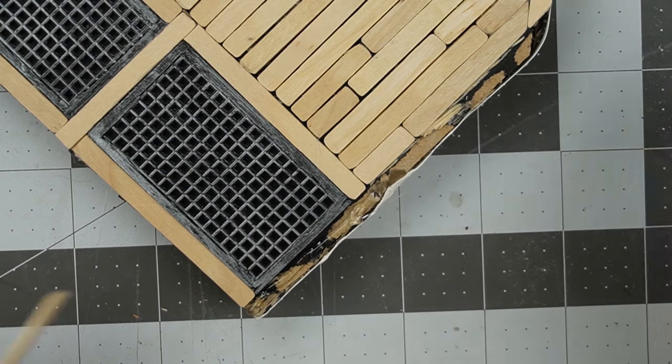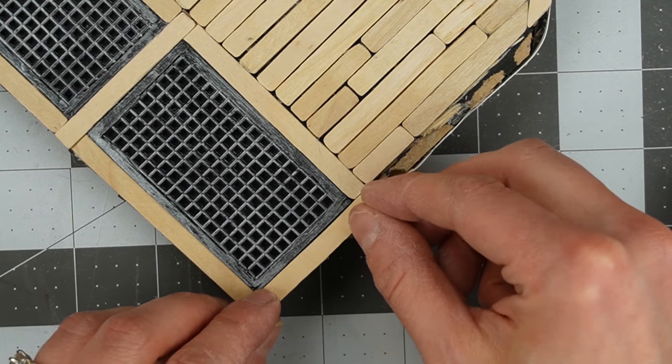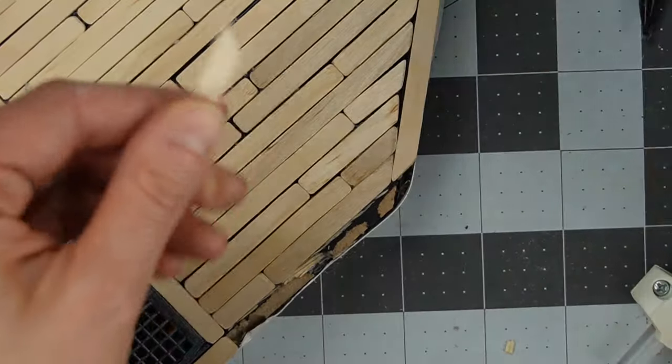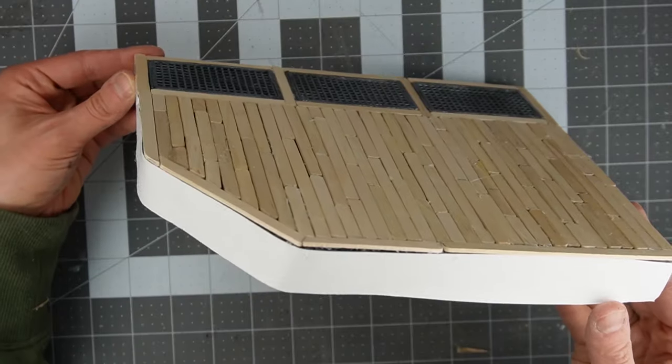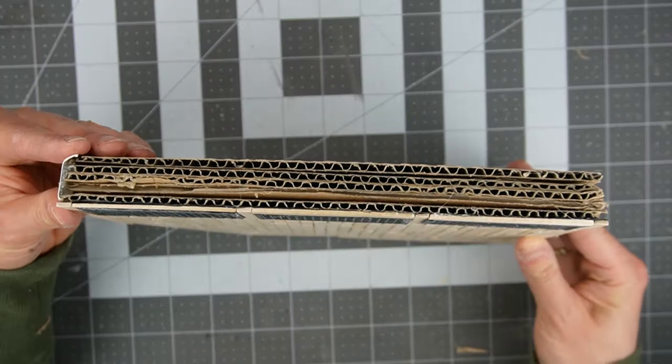A couple hours later I removed the first piece I glued on and replaced it with two pieces. I glued a strip of cardstock across the front to cover up the layers of cardboard.